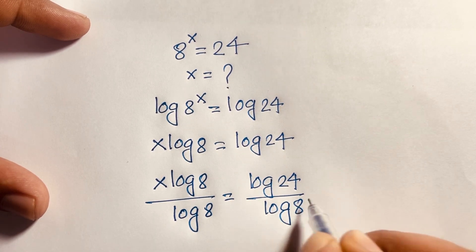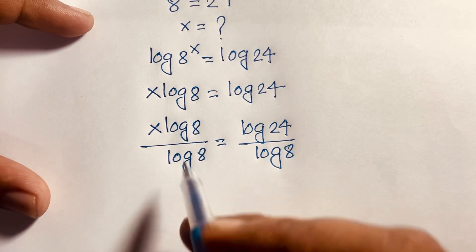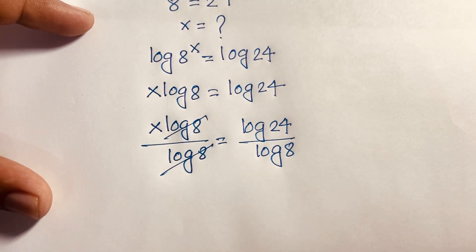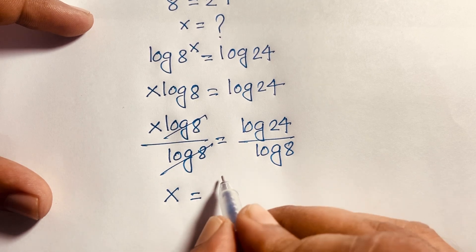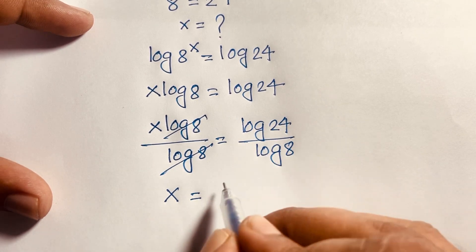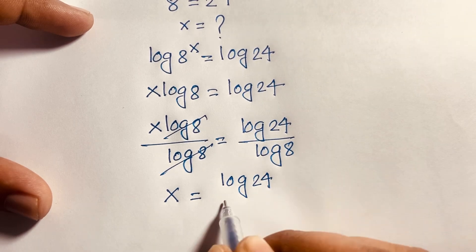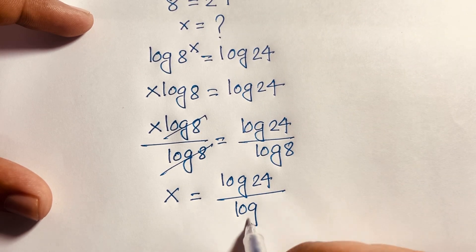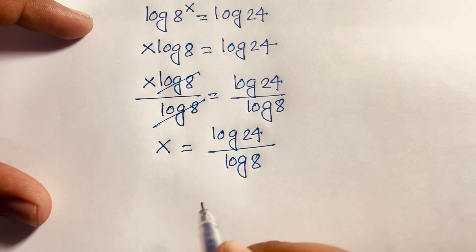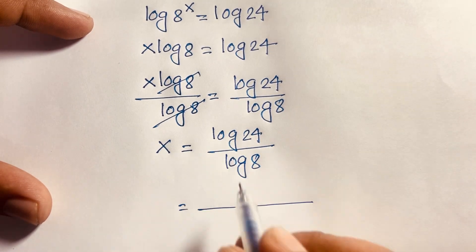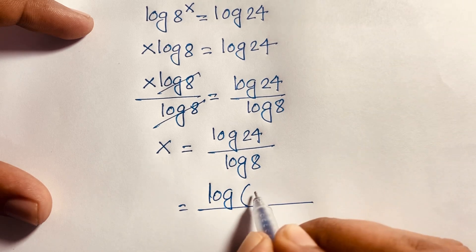After dividing both sides by log(8), the log(8) terms cancel, and we find x is equal to log(24) over log(8).